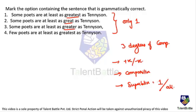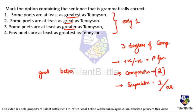Positive degree is the base form. For 'good': 'good' is positive, 'better' is comparative, 'best' is superlative. You cannot say 'I'm better' without comparing to someone — it must be 'better than him.' Now looking at the options: 'as greatest as Tennyson' is wrong because you cannot use 'as...as' with a superlative. 'As greater as' is also wrong.